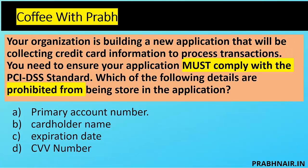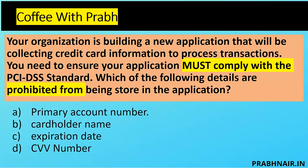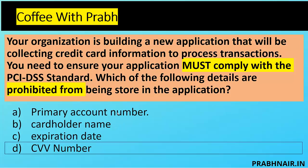Fifth coffee shot: your organization is building a new application that will collect credit card information to process transactions. You need to ensure the application complies with PCI DSS standards. Which of the following details are prohibited from being stored? Primary account number is stored, cardholder name is stored, expiration date is stored — but the CVV number is never stored. That's why the answer is D. As a security architect building an application, consider this factor and define your logic accordingly.